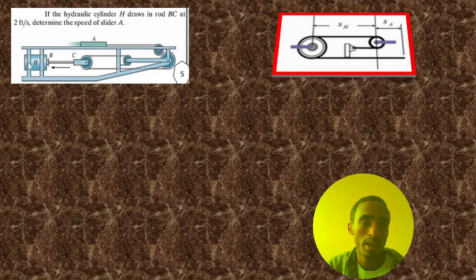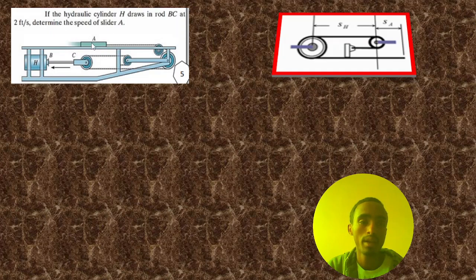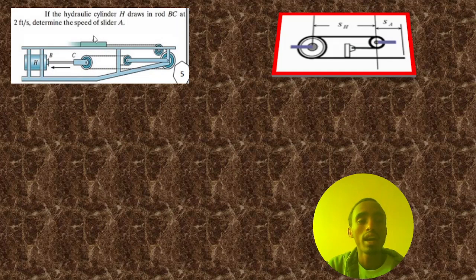Here we have a hydraulic cylinder H, then we have a rod BC down with a speed of two feet per second. We need to determine the speed of A. Here we have block A, then this is connected with a pulley, and this is connected by this link. So we are asked to determine the speed of the cylinder A.